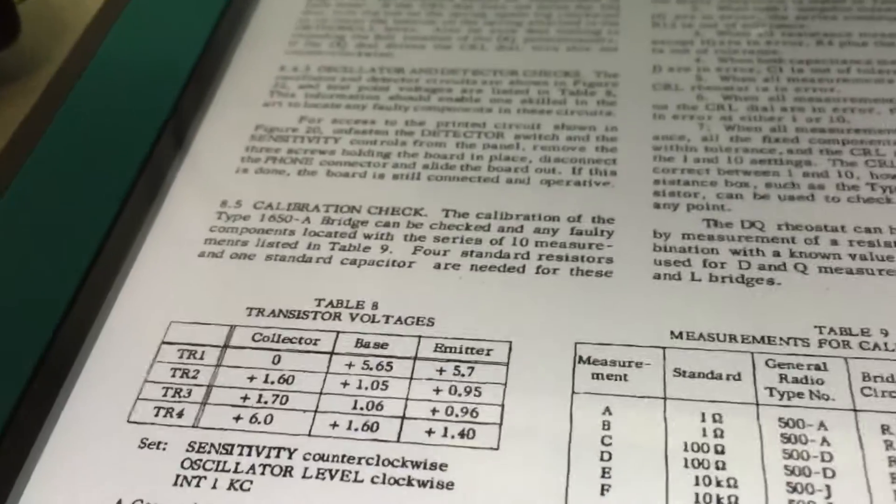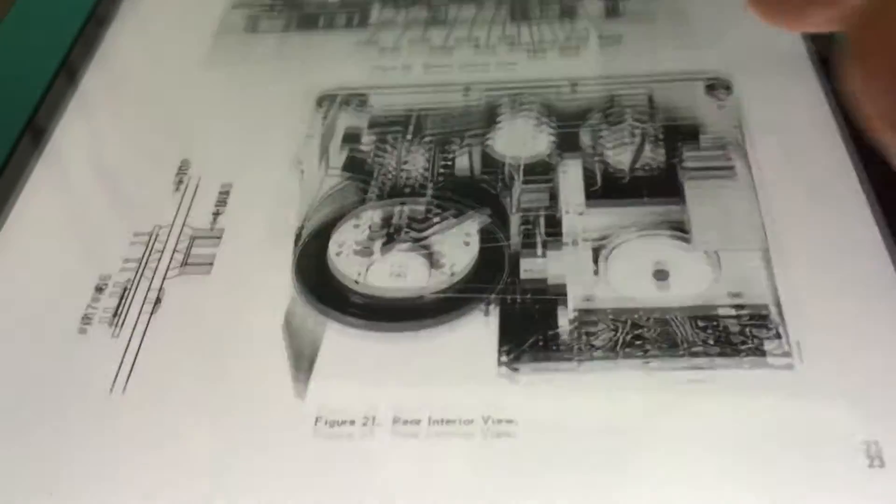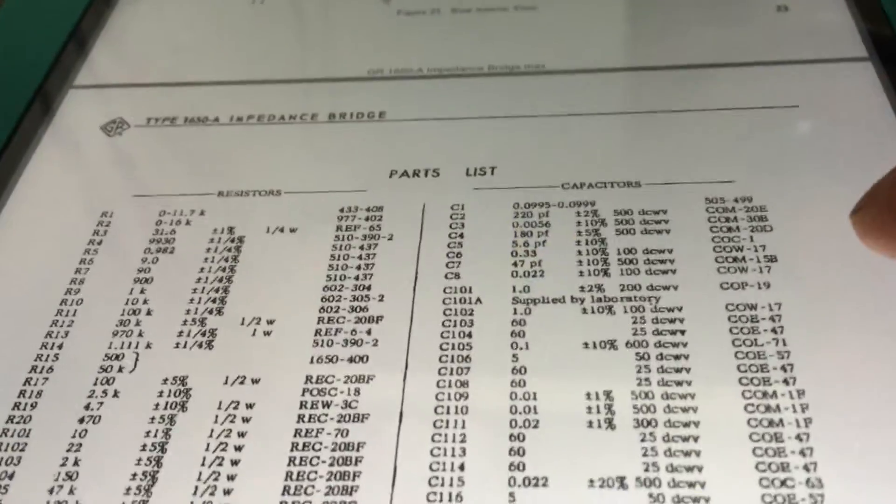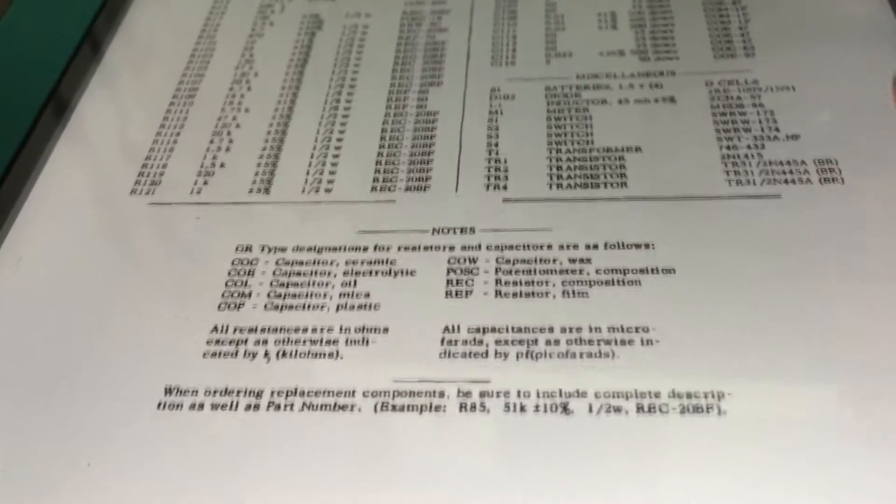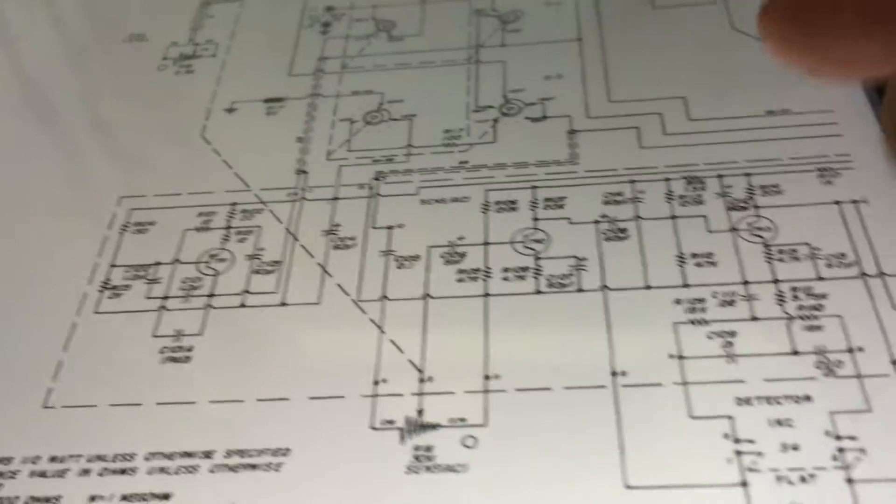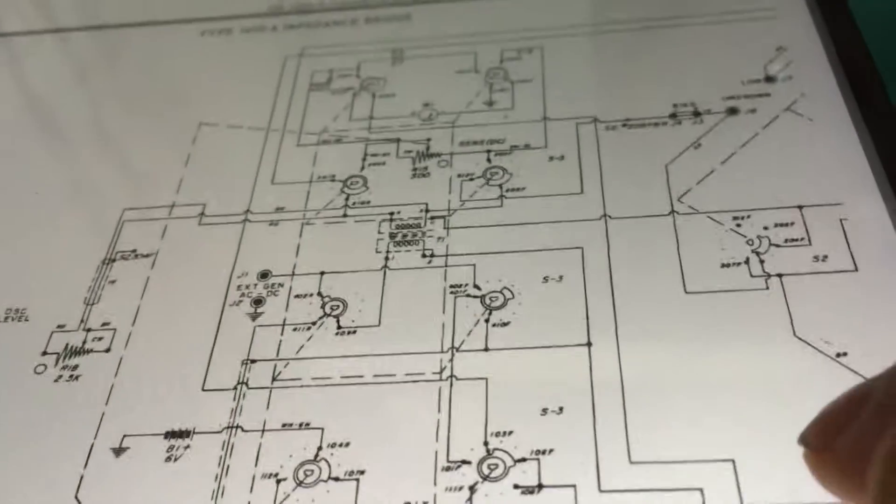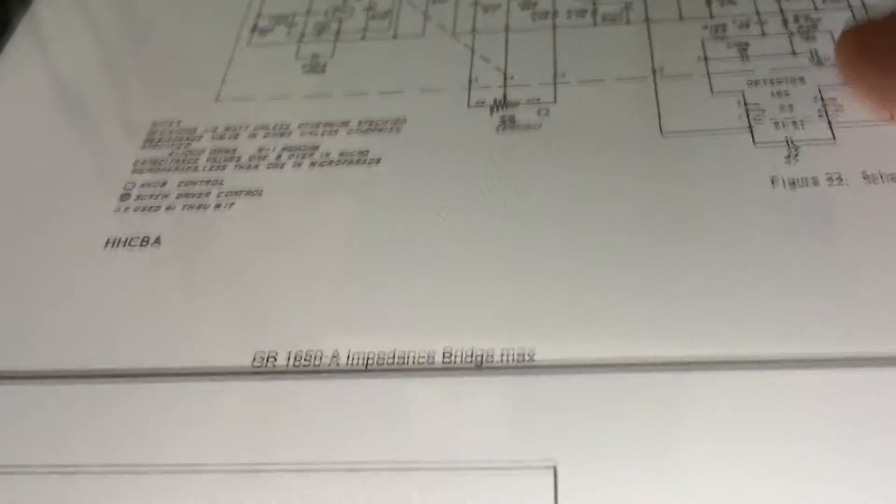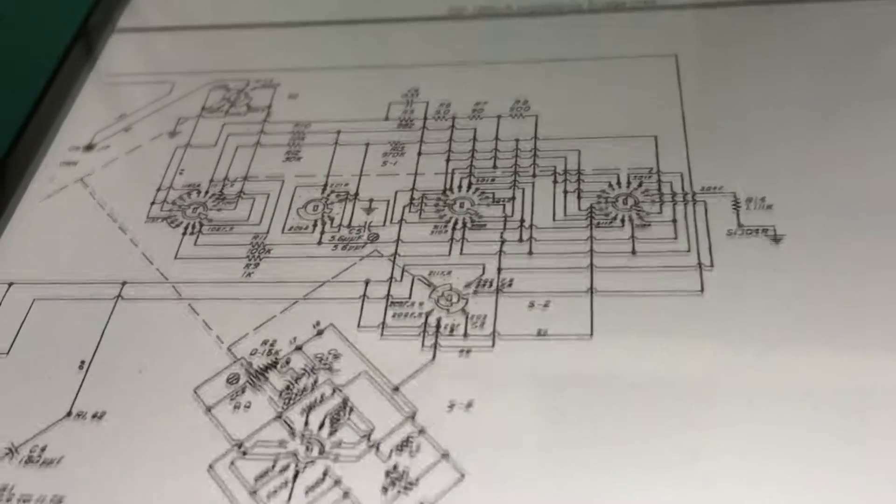Now the documentation talks about reading some transistor voltages as well as looking at the circuit diagram. This is not a Heathkit, so we don't have an obvious trimmer capacitor that we'll be able to simply go in and adjust. We're going to have to open the unit and look at some possible electrolytics that might be leaking.